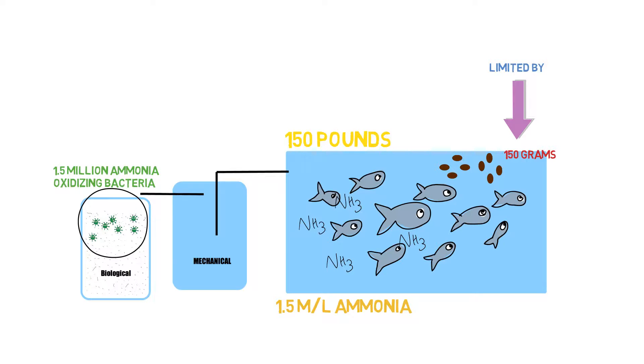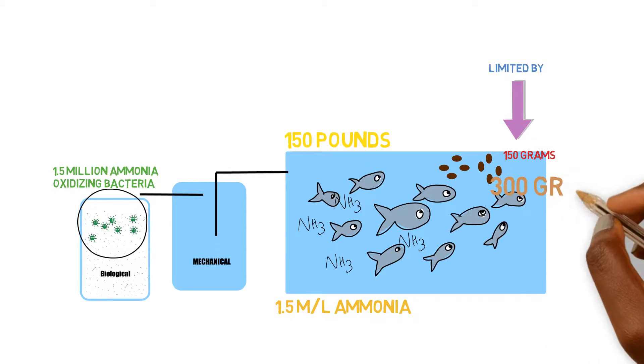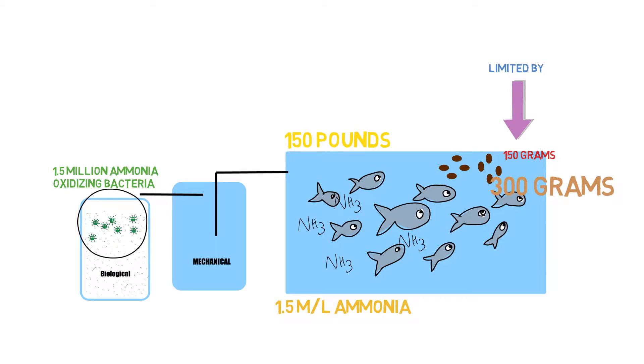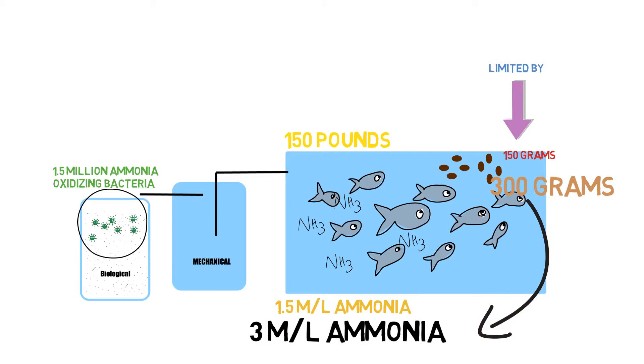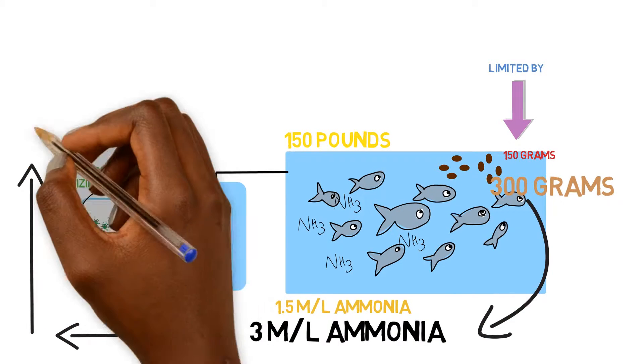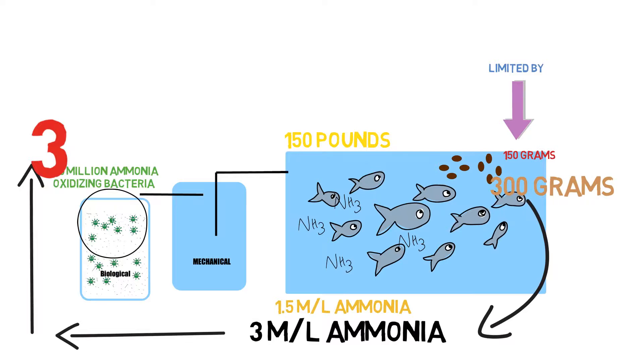Now, if you wanted to add, let's say we wanted to go back up and add 300 grams of feed, and that converts to three milliliters of ammonia. And now the 1.5 million ammonia oxidizing bacteria can now double in size. Why? Because they have a source of energy. Now they're able to sustain themselves.